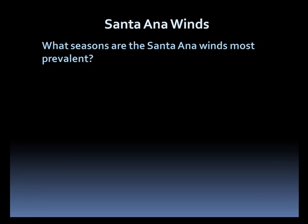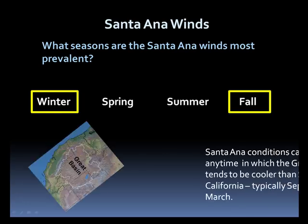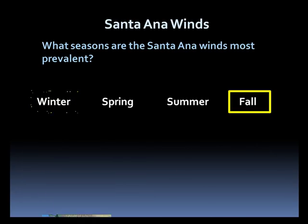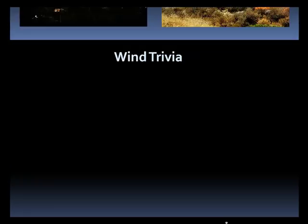Let's look at some Santa Ana wind trivia. What seasons are the Santa Ana most prevalent — winter, spring, summer, or fall? If you chose winter and fall, you are correct. Santa Ana conditions can exist any time the Great Basin tends to be cooler than southern California, but this typically occurs September through March. However, the Santa Ana are most dangerous in the fall, as this fast-moving, dry and hot wind causes vegetation to quickly dry out, increasing the danger for wildfires. If a fire starts, the Santa Ana winds will quickly spread it.